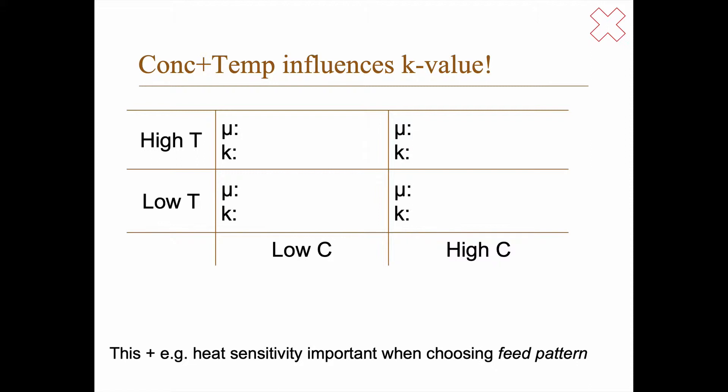Try to fill in this table. When will the viscosity be low, when will it be high, and when will it be intermediate? And what about the apparent heat transfer coefficients — when will they be low, high, or intermediate? We have four combinations: low concentration, high concentration, low temperature, and high temperature. Pause here and try to figure it out.